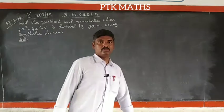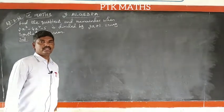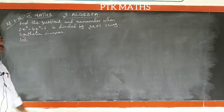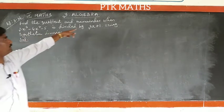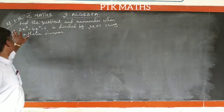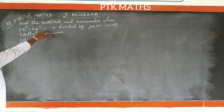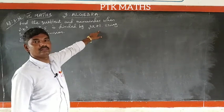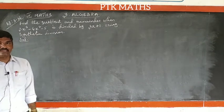Dear students, in this video we are watching 9th mass, third chapter algebra, example 3.36: find the quotient and remainder when 3x³ minus 4x² minus 5 is divided by 3x plus 1 using synthetic division.